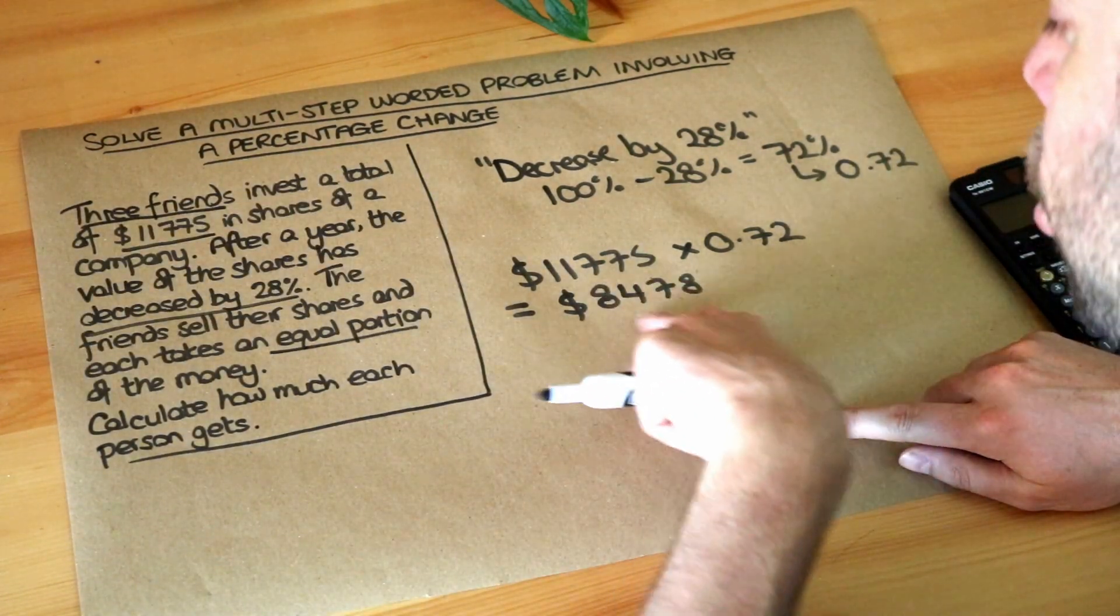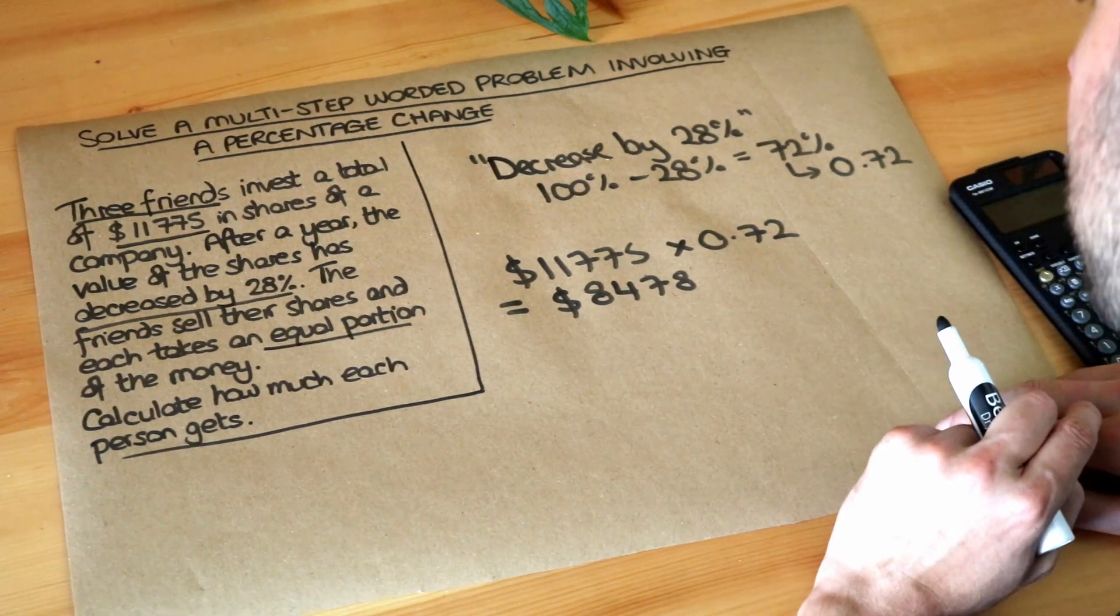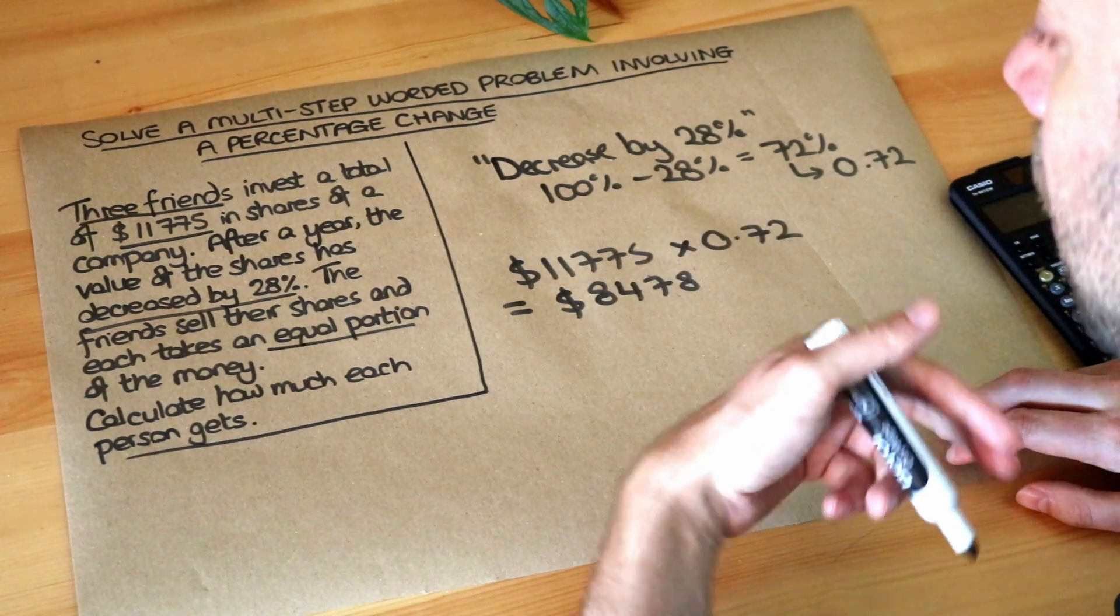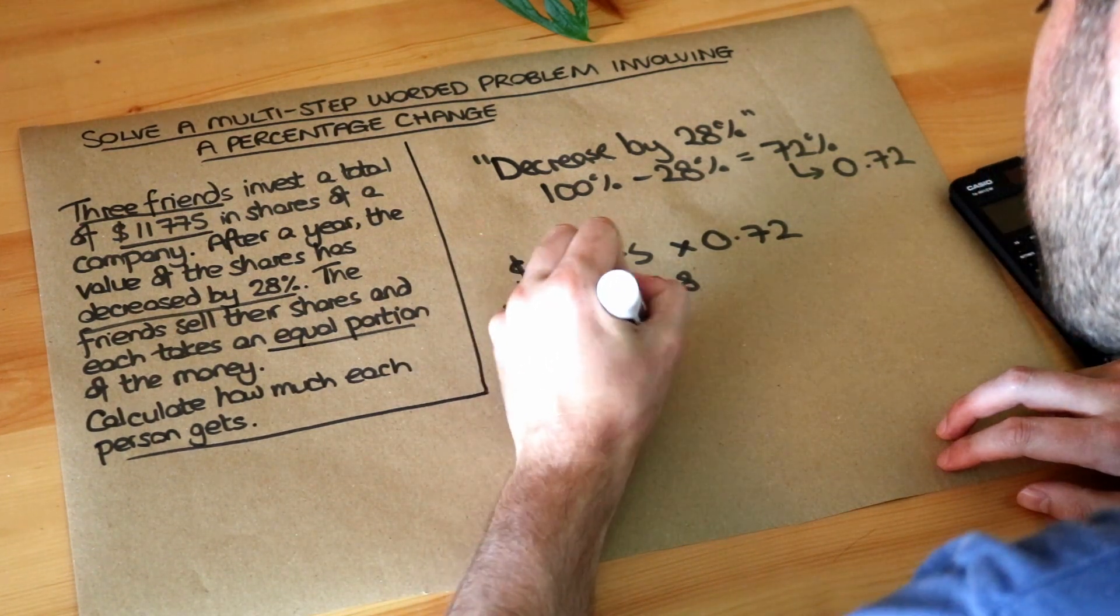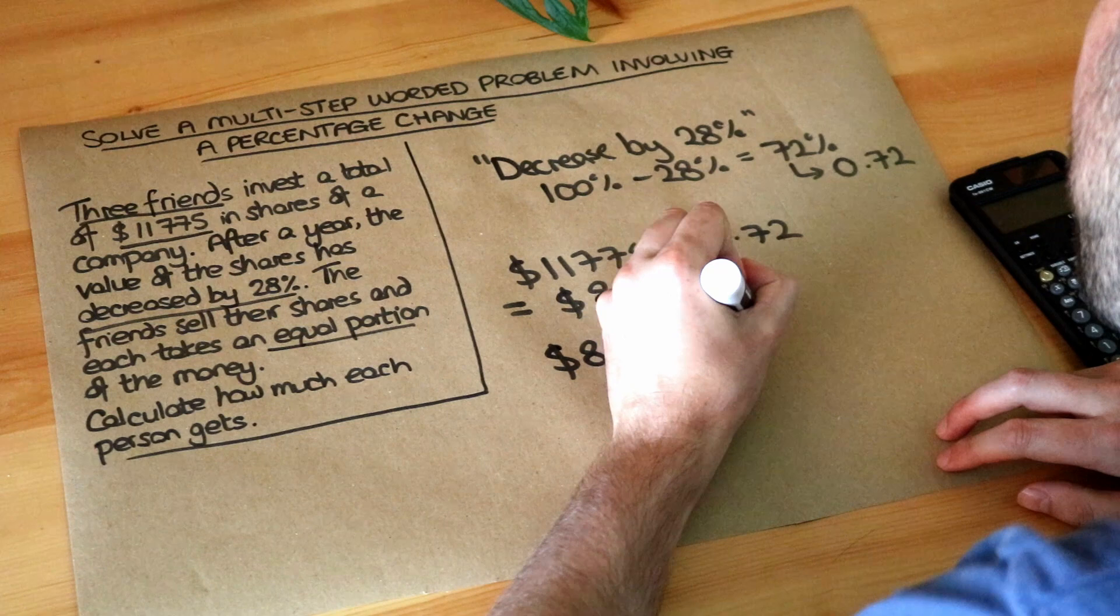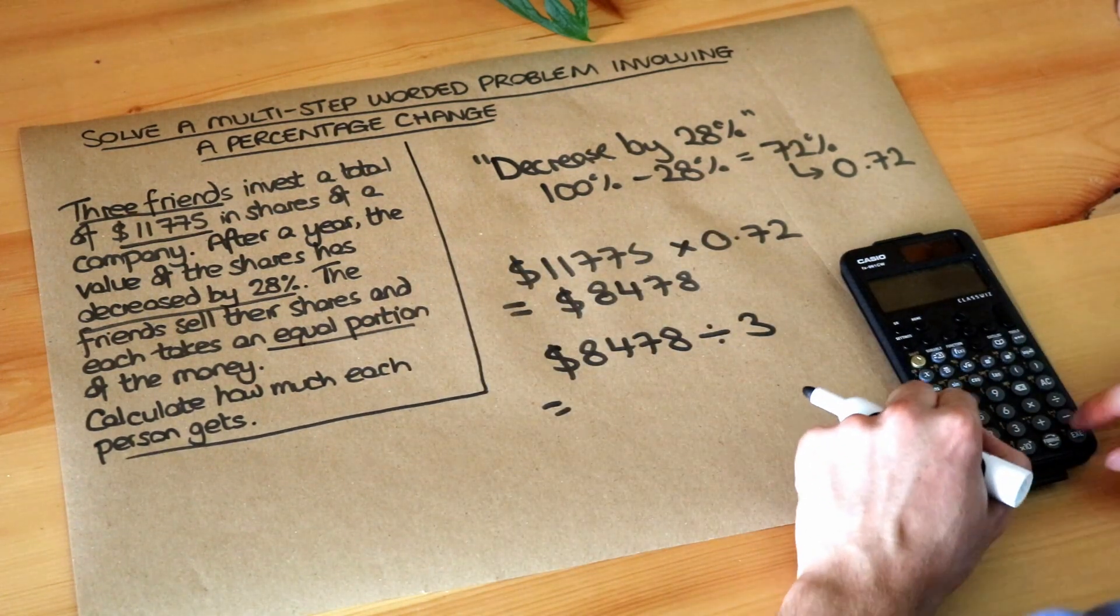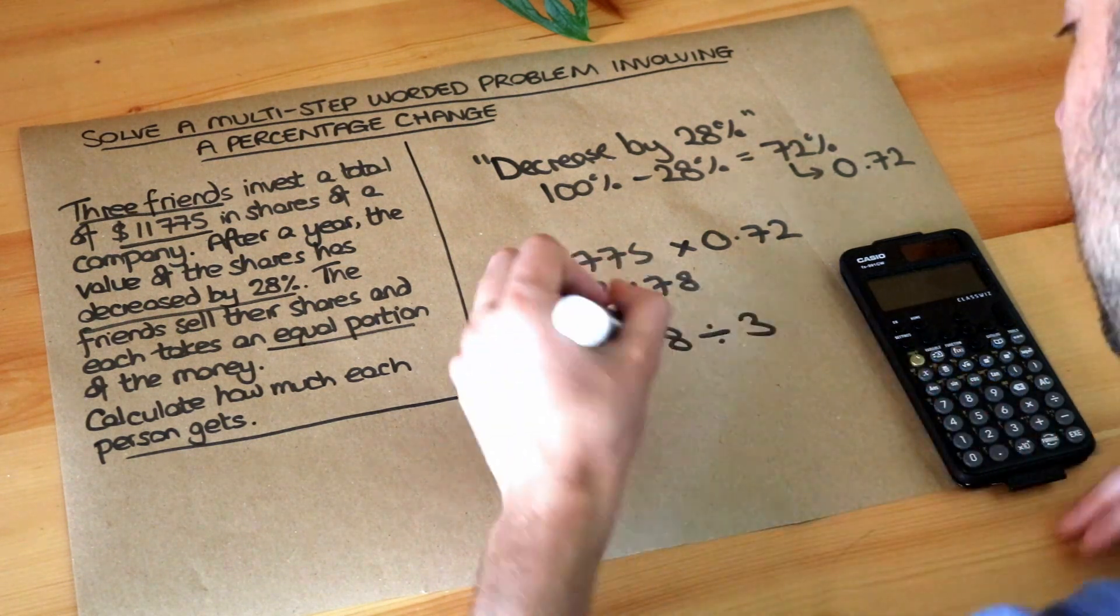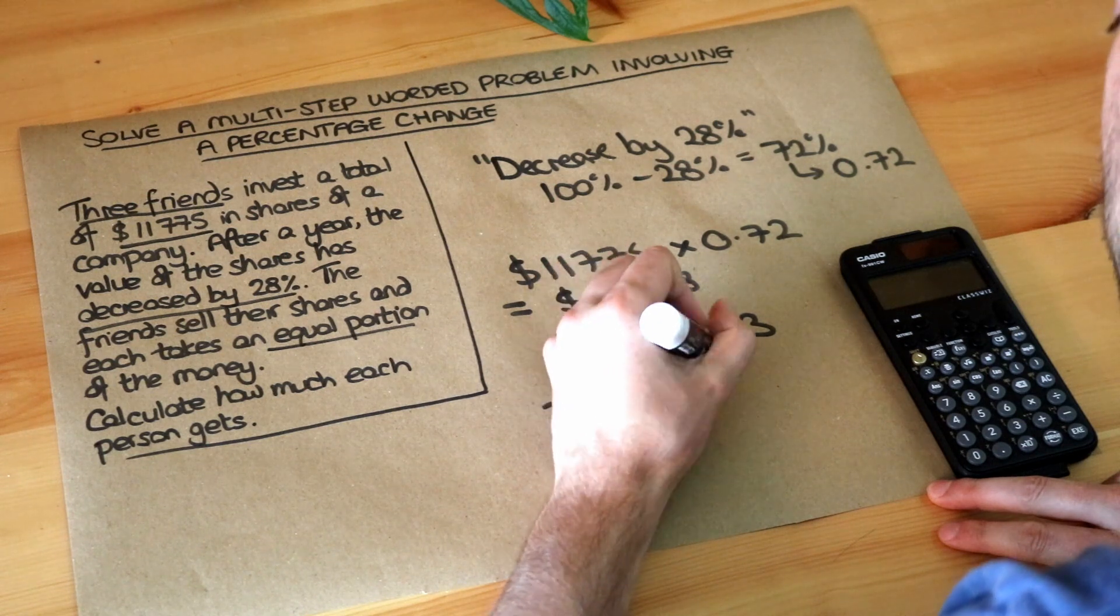So basically the three friends are sharing that new amount of $8,478. To share amongst 3, we just need to divide that value by 3. I'm just going to use my calculator. And that gives me $2,826.